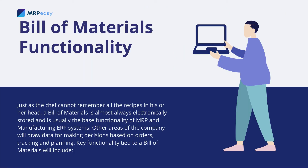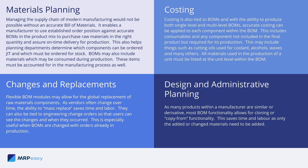Just as the chef cannot remember all the recipes in his or her head, a bill of materials is almost always electronically stored and is usually the base functionality of MRP and manufacturing ERP systems. Other areas of the company will draw data for making decisions based on orders, tracking, and planning. Key functionality tied to a bill of materials will include materials planning.